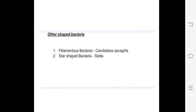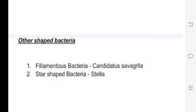We now move on to the exceptional cases of bacteria. The first one is filamentous bacteria. Filamentous bacteria have a tube-like structure — they are called filamentous tubes. A suitable example is Candidatus Savagella. The next exceptional bacteria is star-shaped, also called Stella. This bacteria is in the exceptional cases category.